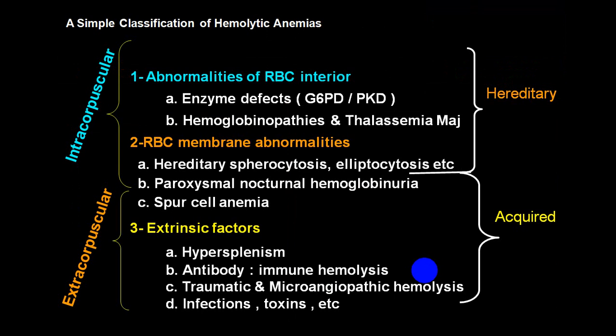The etiology of hemoglobinuria is hemolysis. This hemolysis can be divided into hereditary (congenital) or acquired. In the congenital group, causes include enzyme defects or hemoglobinopathies. In enzyme defects we have G6PD deficiency or PKD, and in hemoglobinopathies the thalassemia group, and membrane abnormalities like hereditary spherocytosis and elliptocytosis.